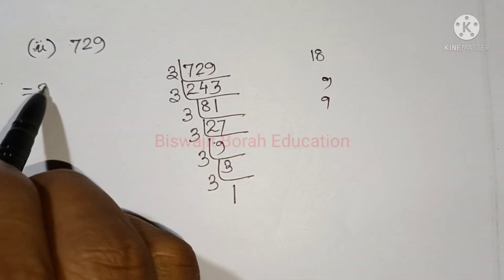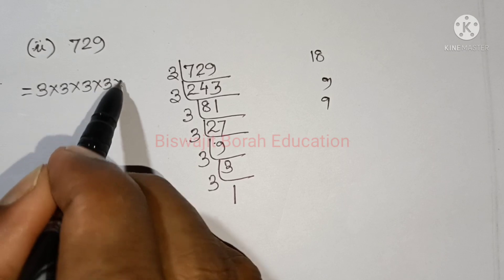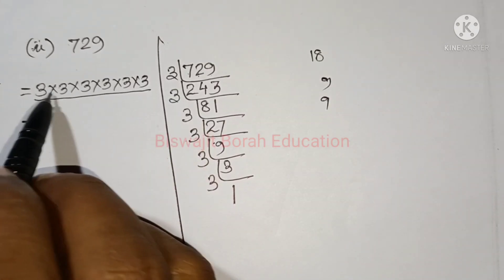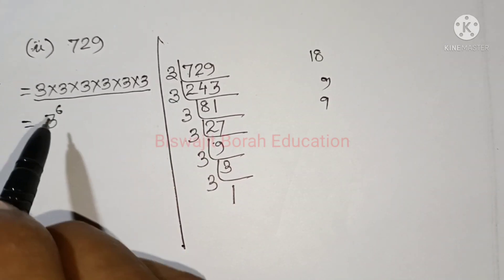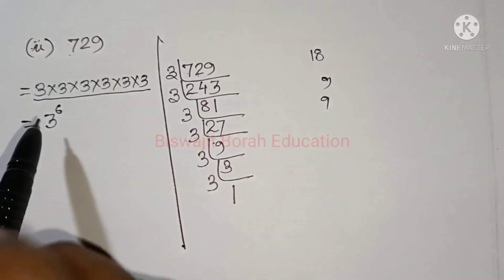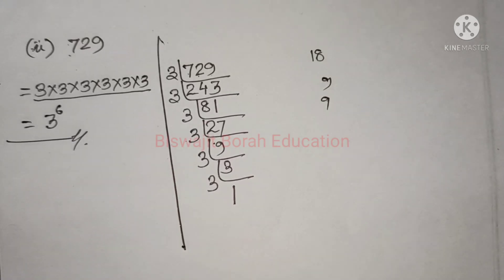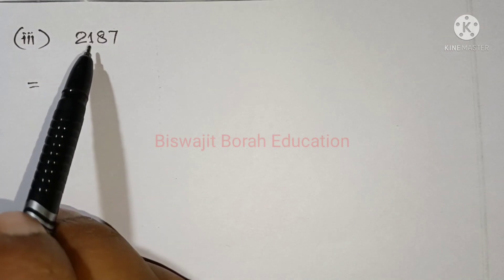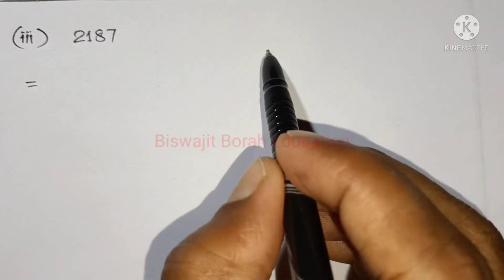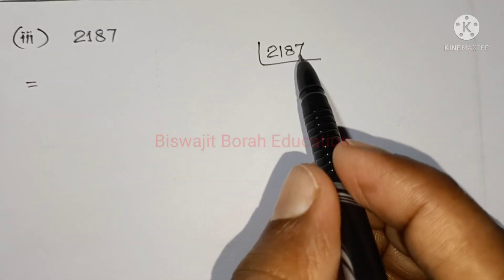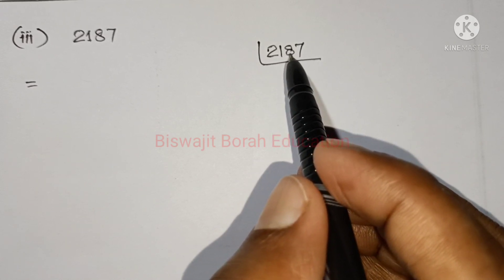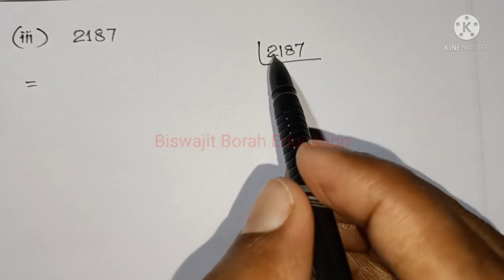So 3×3, then 3×3×6, then 3×6, then 3×3×6, and again 3×3, 3×3, 3×6, 3×6.